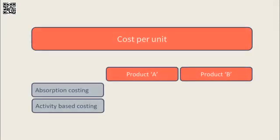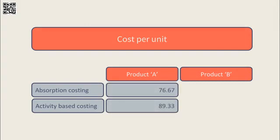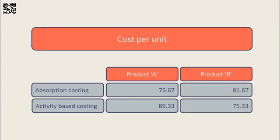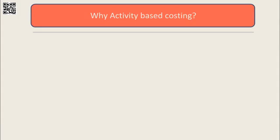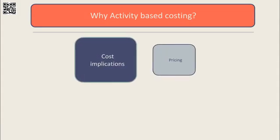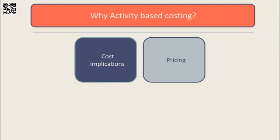Overall, there is a different cost per unit for each product when comparing absorption costing and activity-based costing. Under activity-based costing, Product A's cost per unit increased from $76.67 to $89.33, while Product B's decreased from $81.67 to $75.33. Given the more precise allocation of overhead under activity-based costing, each unit has a more accurate cost, with knock-on implications for product pricing decisions, product viability, and longer-term company decision-making and planning.